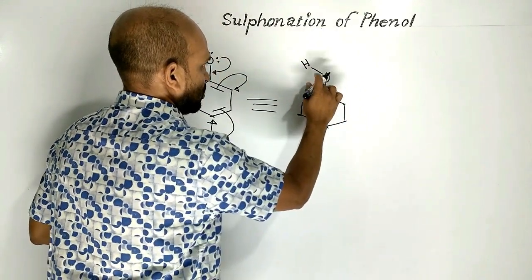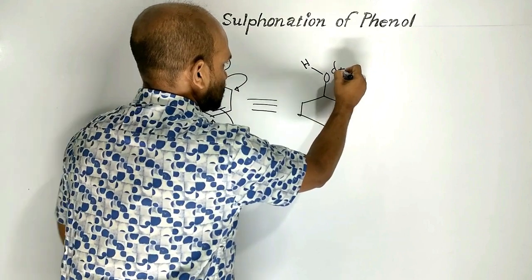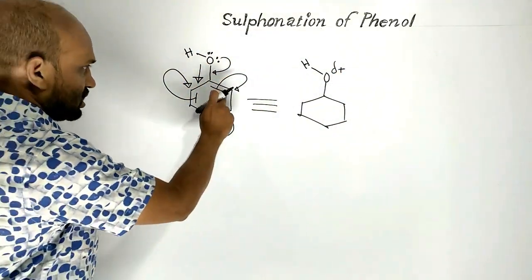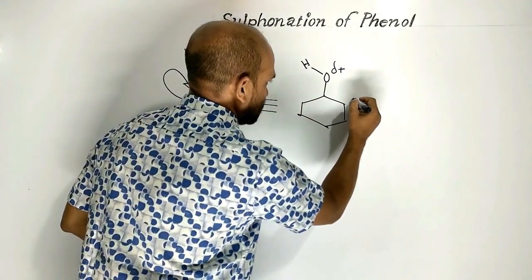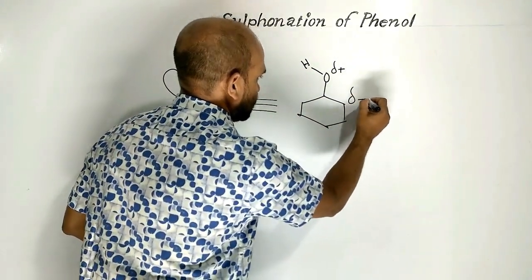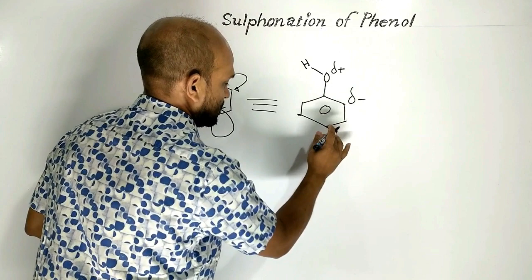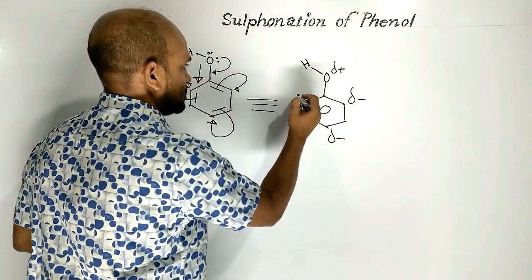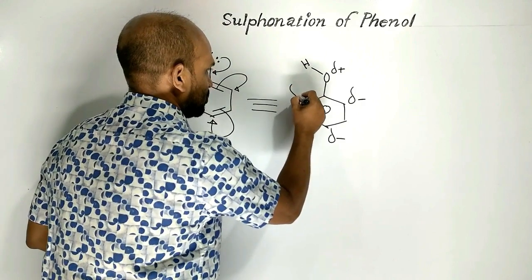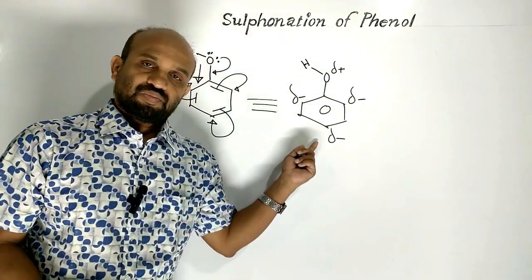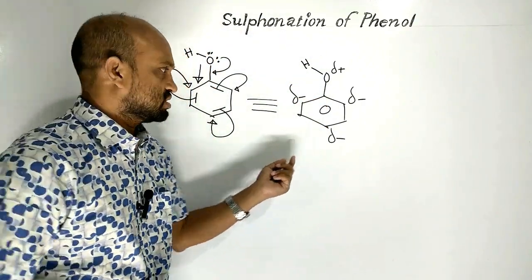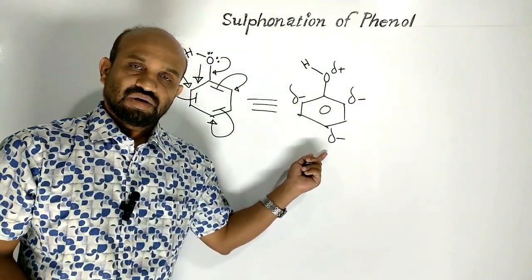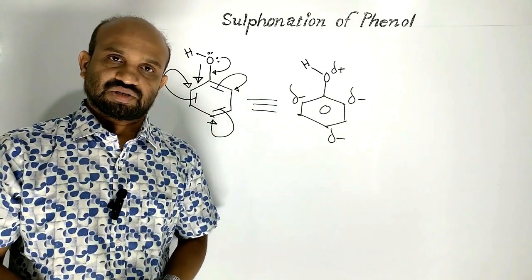Over oxygen, a partial positive charge is developed. At the ortho positions, a partial negative charge develops. At the para position, a partial negative charge. At both ortho positions and the para position, a partial negative charge is present. That is, ortho positions and para position become partially negatively charged.